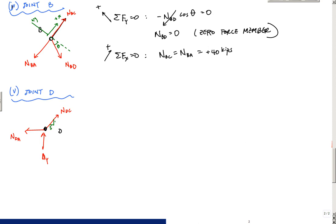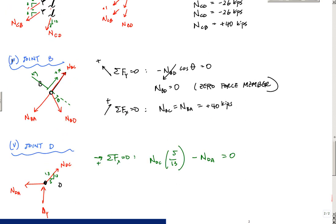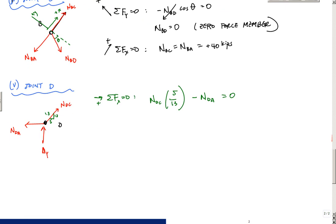And I just have to take that negative number and plug it into the equilibrium equation. It's a 5, 12, 13 triangle. So sum of the forces in the X equal to zero. Let's say this way is positive. I would get NDC times 5 thirteenths minus NDA equals zero. And then I would say that NDC is negative 26. So when I plug in the numbers, I just have to plug in negative 26 kips times 5 thirteenths and that's going to be NDA.